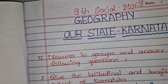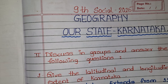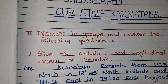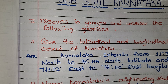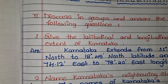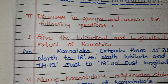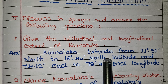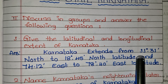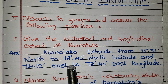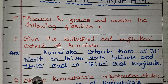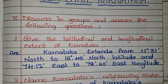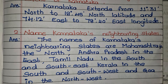Now let's start the question answers. Ninth social science geography, Our State Karnataka — discuss in groups and answer the following questions. The first question: give the latitudinal and longitudinal extent of Karnataka. The answer is: Karnataka extends from 11°31' North to 18°45' North latitude and 74°12' East to 78°40' East longitude.